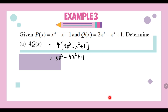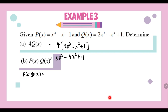Scalar multiplication is much simpler compared to multiplication of two polynomials. Next, we are going to look at multiplication of two polynomials, which is P(x) multiplied by Q(x). We write down P(x), which is x² - x - 1, followed by Q(x), which is 2x³ - x² + 1.